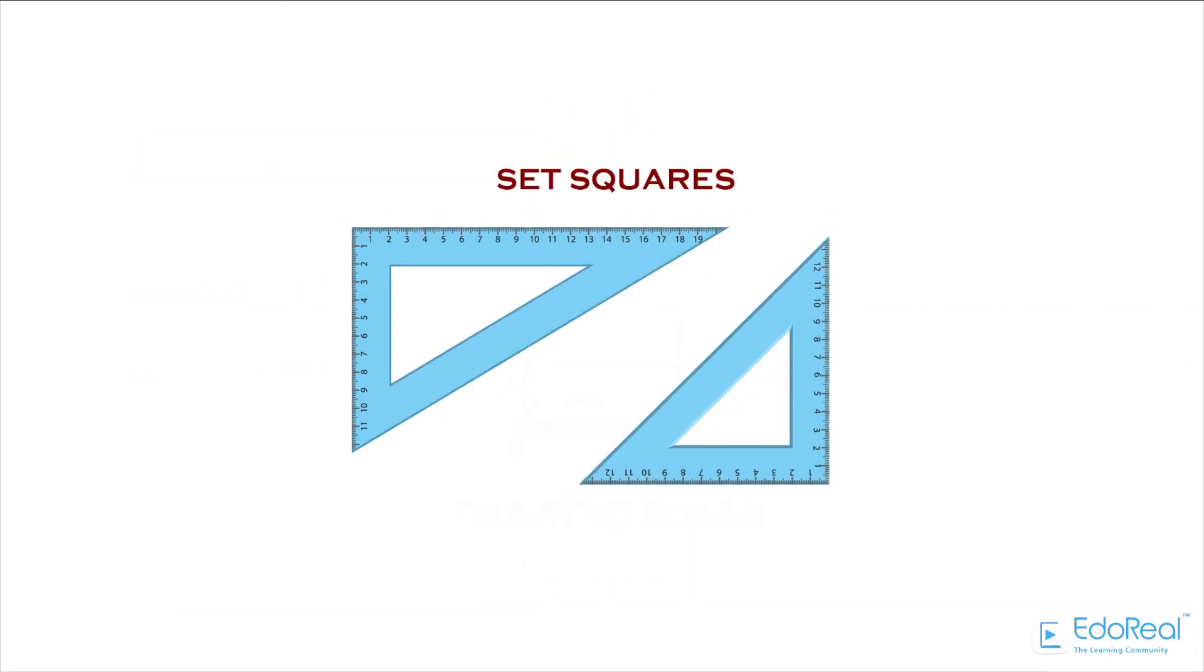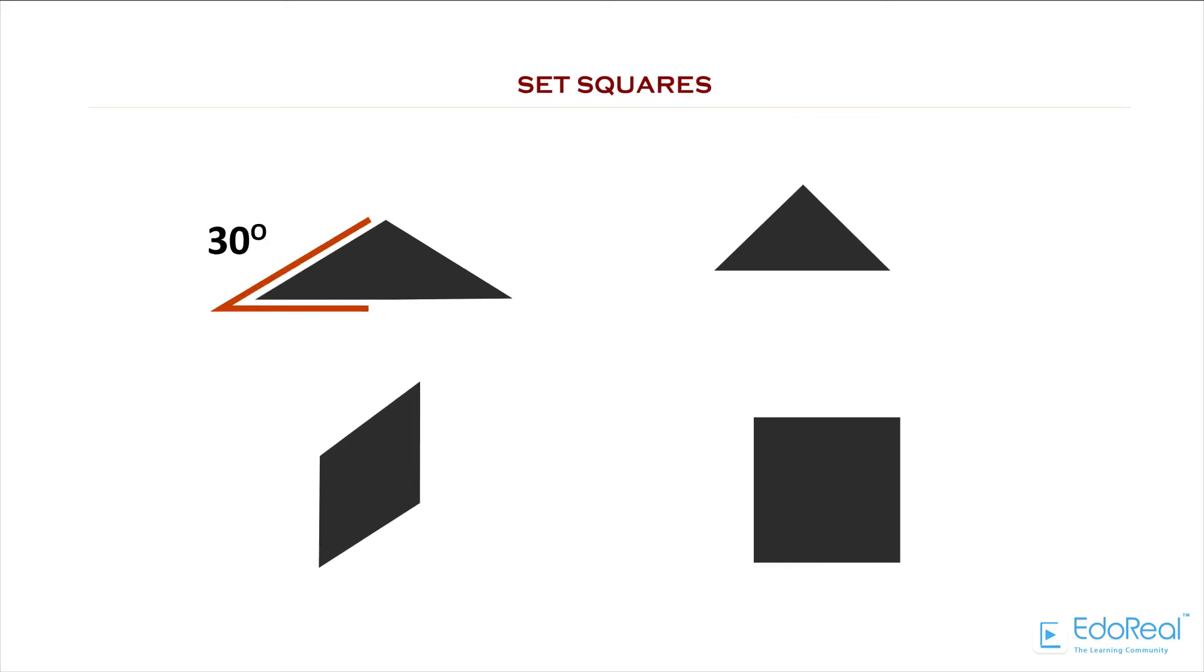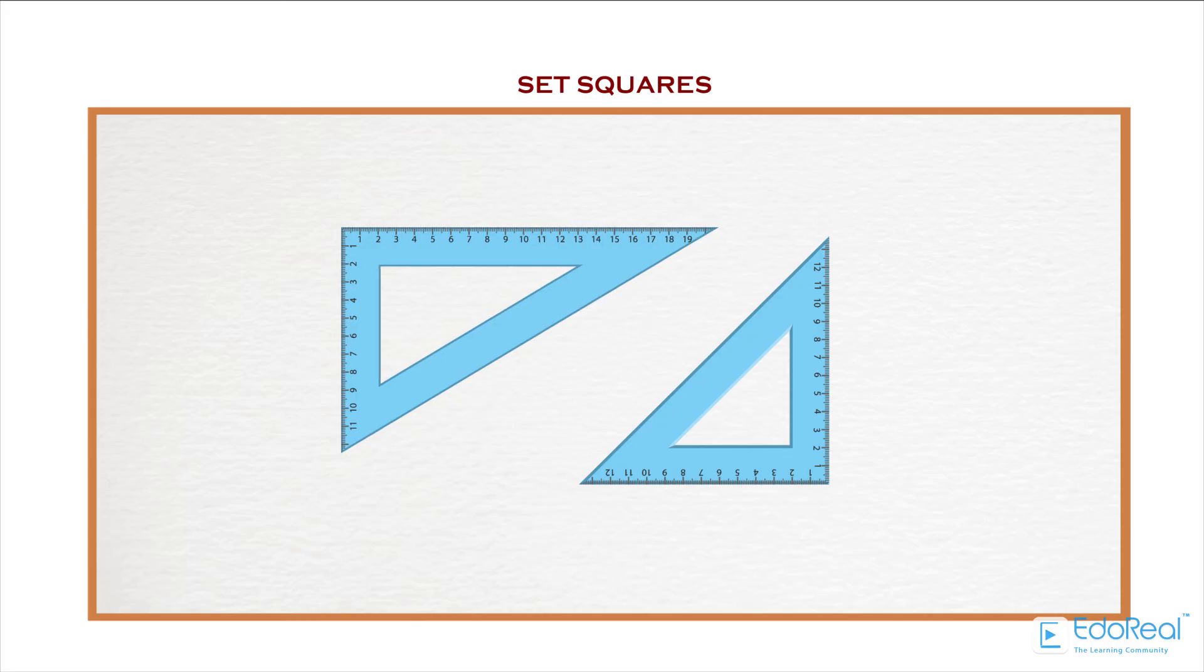Set-squares are used to draw lines with an angle between them. In most of the structures, 30, 45, 60, and 90-degree lines are most common. So set-squares make the work easier for this type of drawing. Generally, set-squares are of two types: one is a 45-degree set-square, and another one is a 30-to-60-degree set-square.